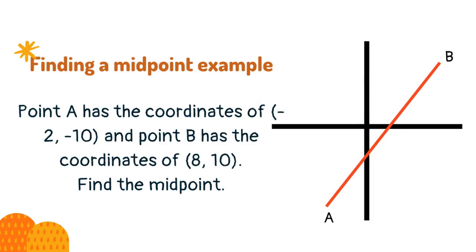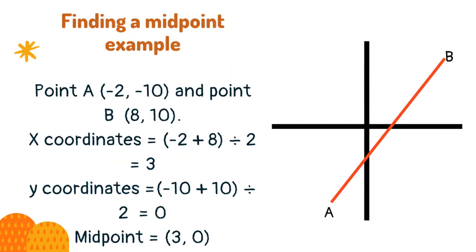Point A has the coordinates of minus 2, minus 10, and point B has the coordinates of 8, 10. Find the midpoint. Point A minus 2, minus 10, and point B 8, 10. x-coordinates equals minus 2 plus 8, divided by 2 equals 3. y-coordinates equals minus 10 plus 10, divide by 2 equals 0. Midpoint equals 3, 0.